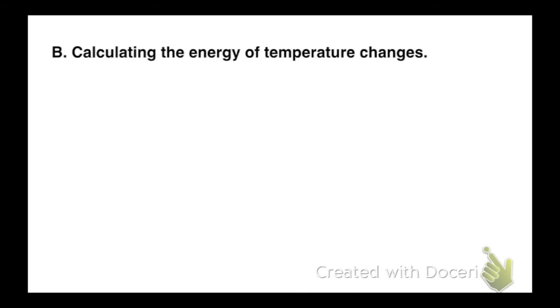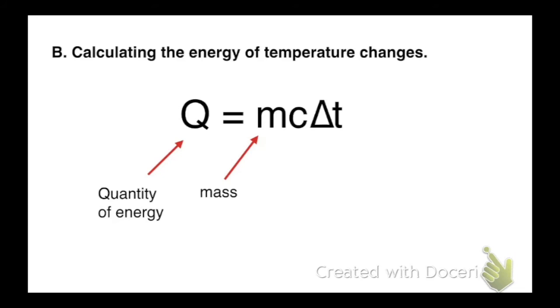Okay, so how do we calculate the temperature, the energy of a temperature change? Well, it's very simple. We're going to have this formula. Q equals mc delta t. Q is the quantity of energy. M is the mass. C is specific heat capacity. And delta t means change in temperature. Delta means change. That triangle is a delta, means change in temperature. All right, moving on.